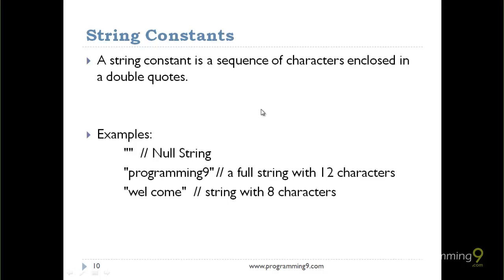In string constants, they're enclosed with double quotes. For example, double quotes with nothing in between is a null string. "programming9" in double quotes is a string of length 12 characters. You can also write with spaces; space counts as an extra character. So 3 plus 4 equals 7, plus 1 equals 8, meaning this string consists of 8 characters.